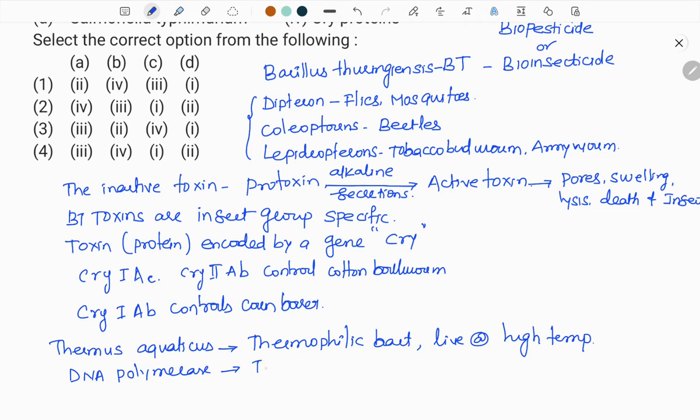From Thermus aquaticus a DNA polymerase is extracted, that is Taq polymerase. The specialty of this enzyme is that it can catalyze polymerization of nucleoside triphosphates at high temperature like 80 to 90 degree Celsius. This enzyme is popularly used in PCR technique, that is polymerase chain reaction.